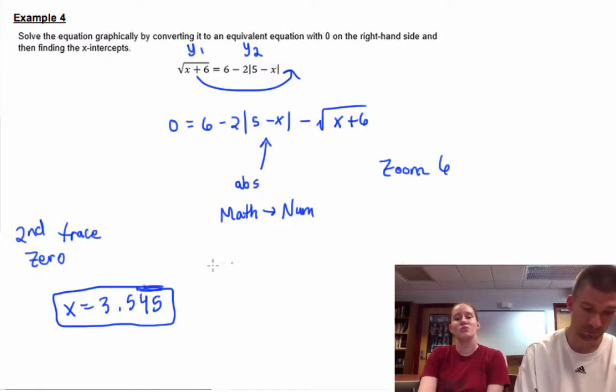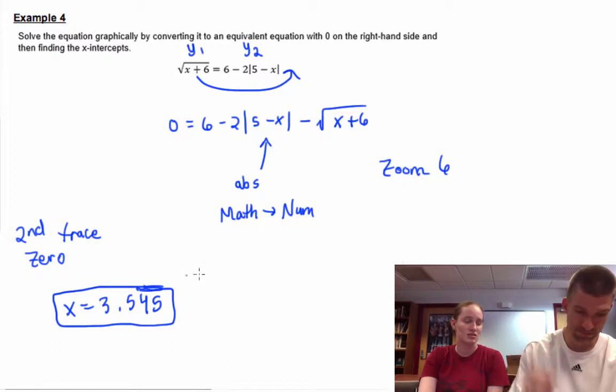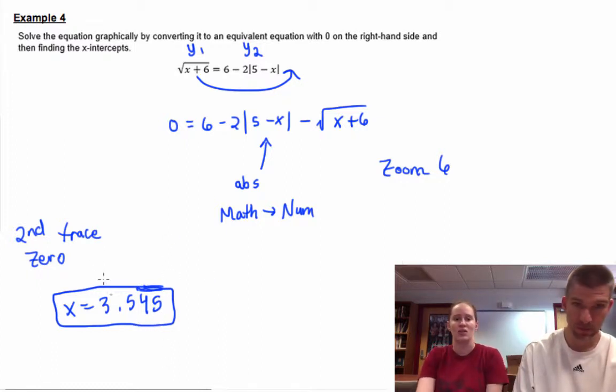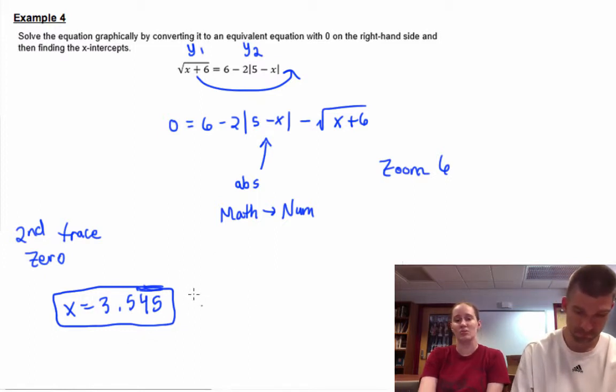You are allowed to round or truncate. Truncate is a fancy word for cutting off. So I could have put 3.544, and that would also be correct.